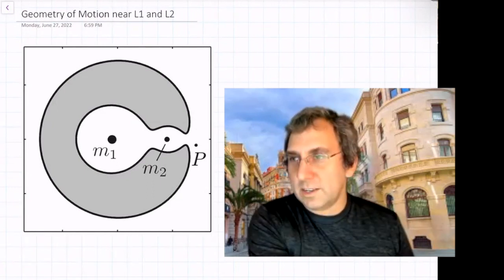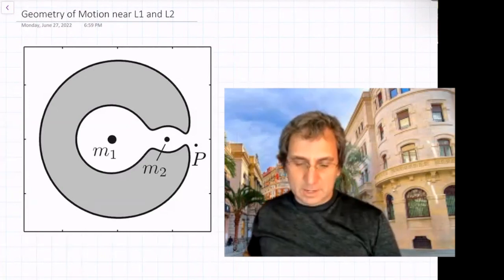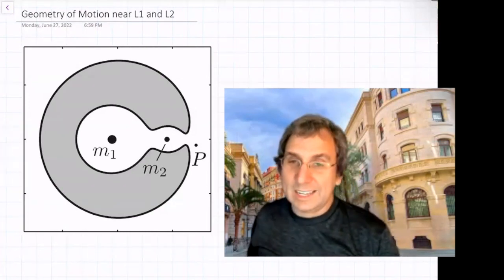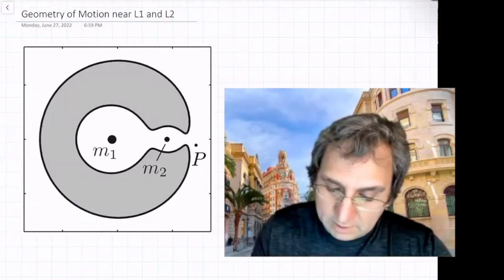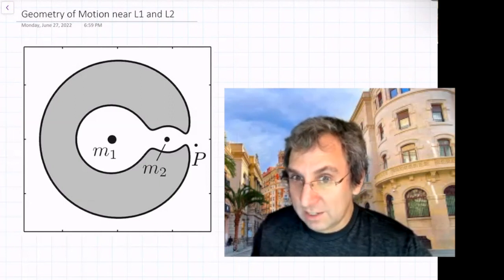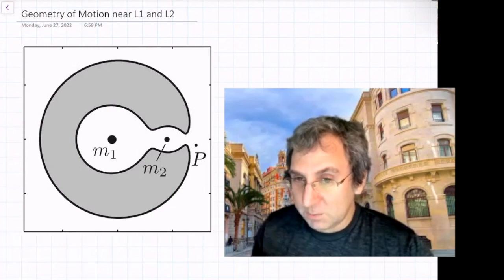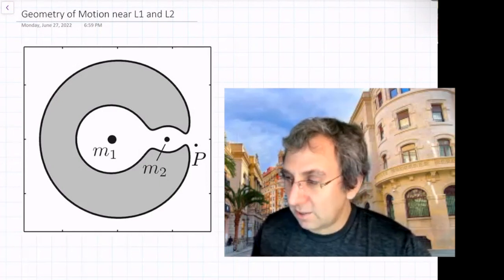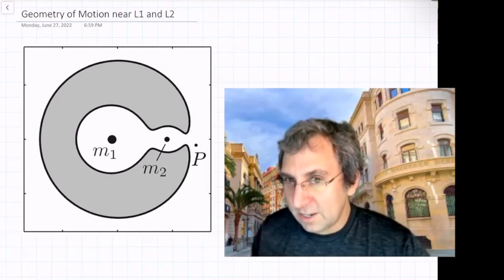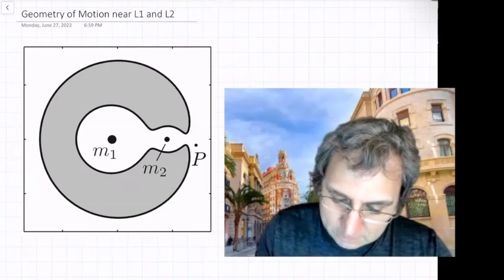So last week we had started talking about the geometry of motion near L1 and L2. We were looking at the linearized equations, taking a point of view of trying to understand what the dynamics looks like, what kinds of motions are possible. We're taking a dynamical systems point of view where you first look at the equilibrium points and try to understand the dynamics near them, and they might have some role in the larger scale dynamics.